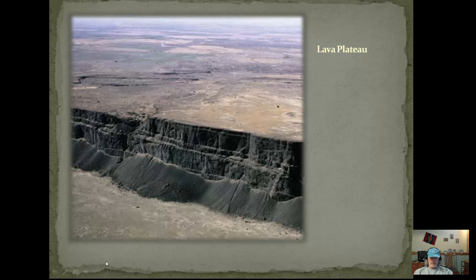This is a lava plateau — the Columbia Plateau out in the Pacific Northwest. This is just magma from fissures with very low viscosity that just started piling up, and can be several hundred feet high. This is all very dark, mafic material. There's nothing real eruptive here — the lava just flowed to the surface and spread out, forming a large, flat plateau.